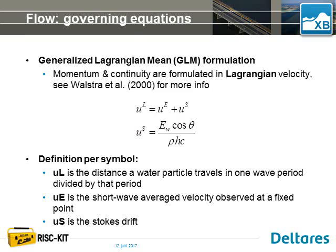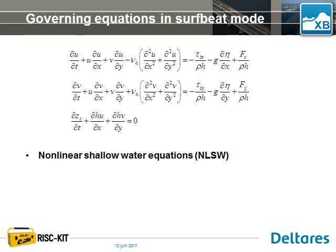In the flow module we use the generalized Lagrangian mean formulations, where we solve for the Lagrangian velocity and use this to derive the Eulerian velocity by including the Stokes drift velocity. The superscript L refers to Lagrangian, E to Eulerian, and S to Stokes drift. The main equation we solve in the flow module is the nonlinear shallow water equations.